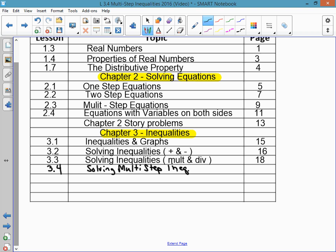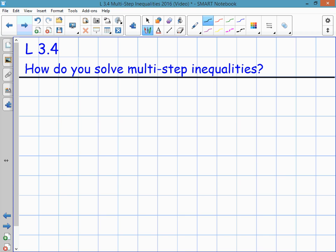You find the next available page in your notebook, number it, and write it in the table of contents. I'm not going to ask you to take Cornell notes today, but I would like you to write in the essential question for this lesson, and that is how do you solve multi-step inequalities. Don't forget lesson 3.4.